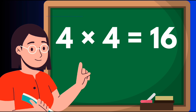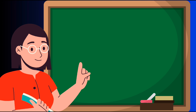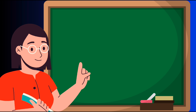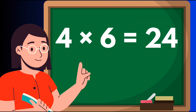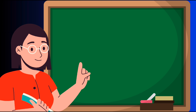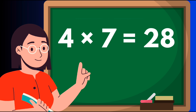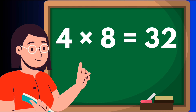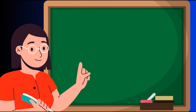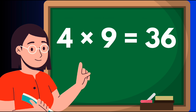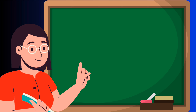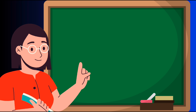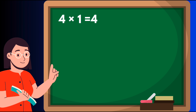Four fours are sixteen, four fives are twenty, four sixes are twenty-four, four sevens are twenty-eight, four eights are thirty-two, four nines are thirty-six, four tens are forty. Four ones are four.